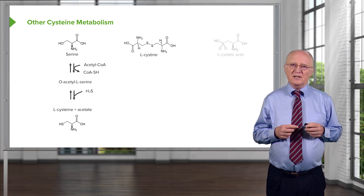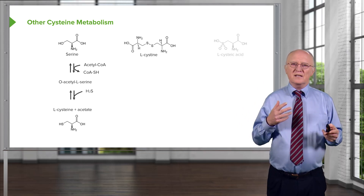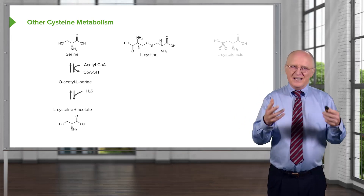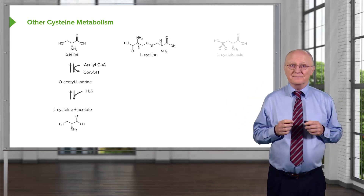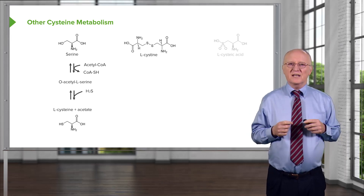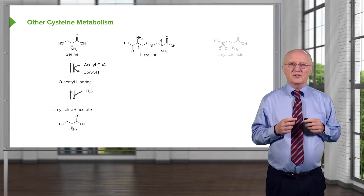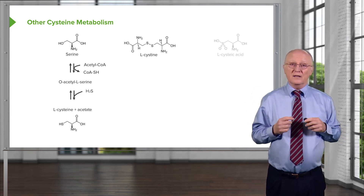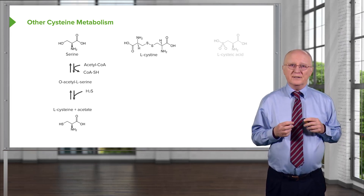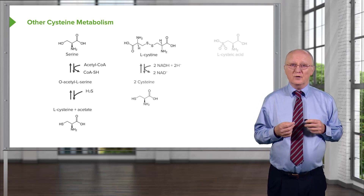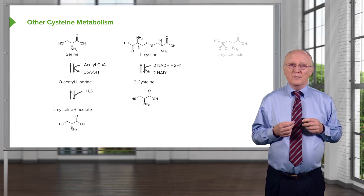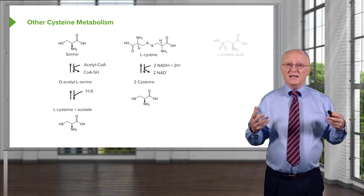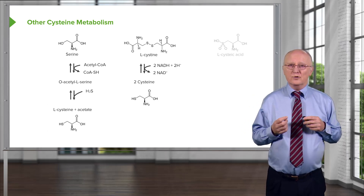A second way of making cysteine actually comes from proteins themselves. One of the things that cysteine can do in a protein is combine with another cysteine in a covalent bond to make L-cystine, involving the joining of two cysteines by a disulfide bond as shown in the middle of the molecule. When proteins are cleaved and have had this bond, L-cystine is the product of the protein breakdown. Making cysteine from L-cystine is trivial — it simply involves breaking that bond via reduction, with electrons coming from NADH, producing two cysteines.